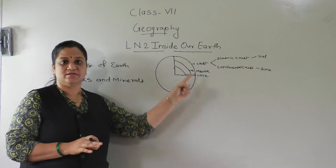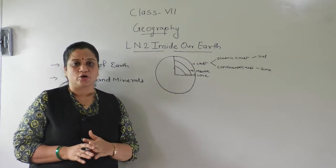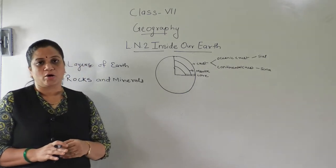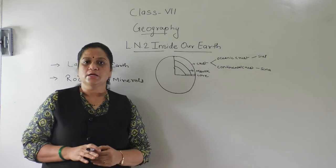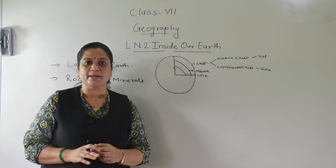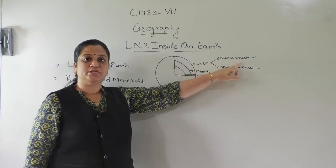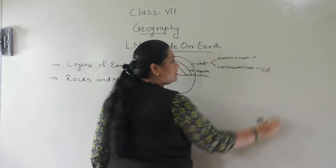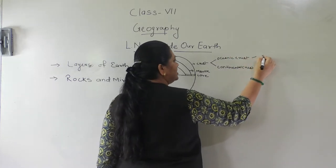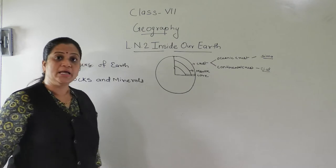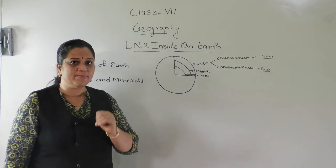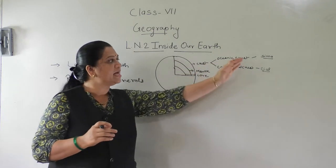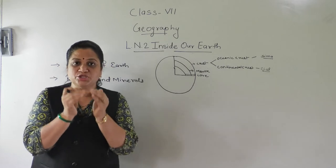The earth's crust is made up of different types of rocks. Any natural mass of mineral matter that makes up the earth's crust is called a rock. Rocks are of different size, shape, and colour. We use the term 'natural mass of mineral' because when we studied about the crust, we studied about the oceanic crust and the continental crust. The continental crust was made up of silica and alumina, called SIAL, and the oceanic crust was made up of silica and magnesium, called SIMA. So the rocks contain these minerals — that is why they are called the natural mass of minerals.